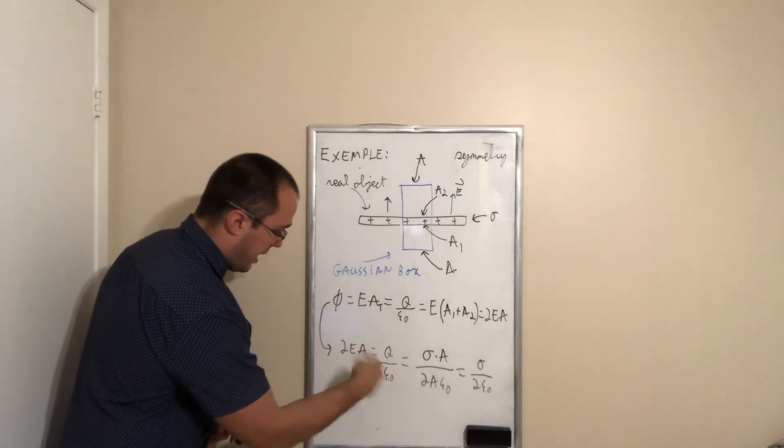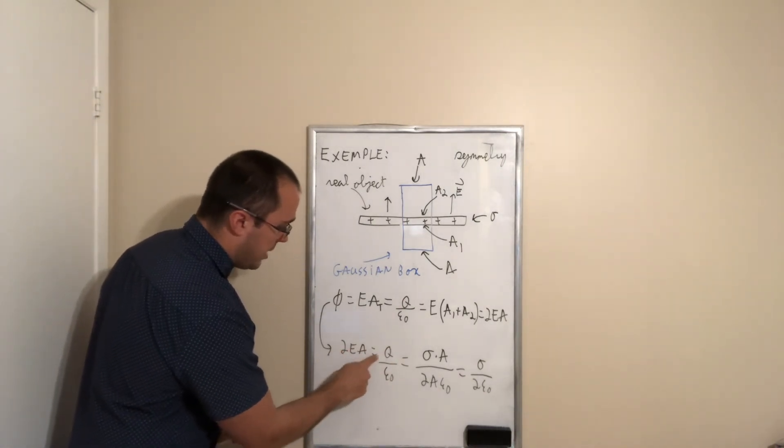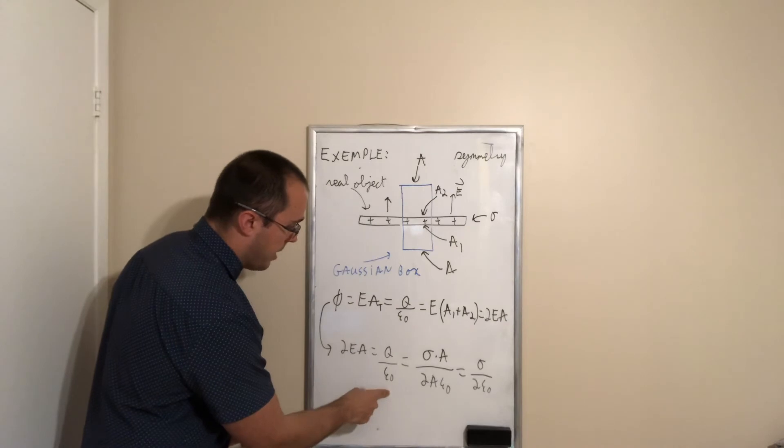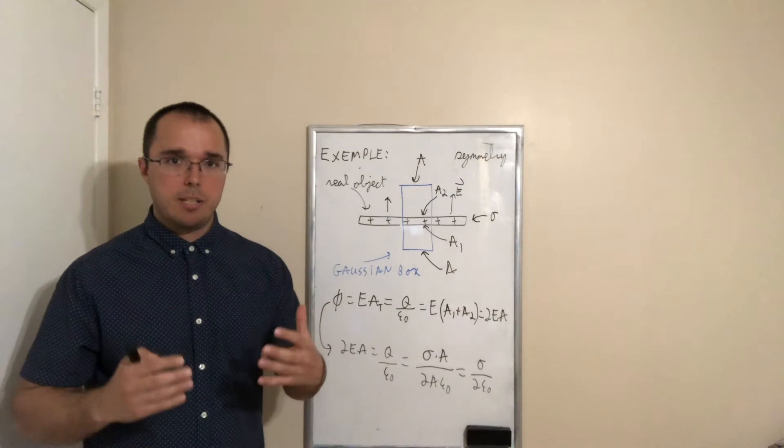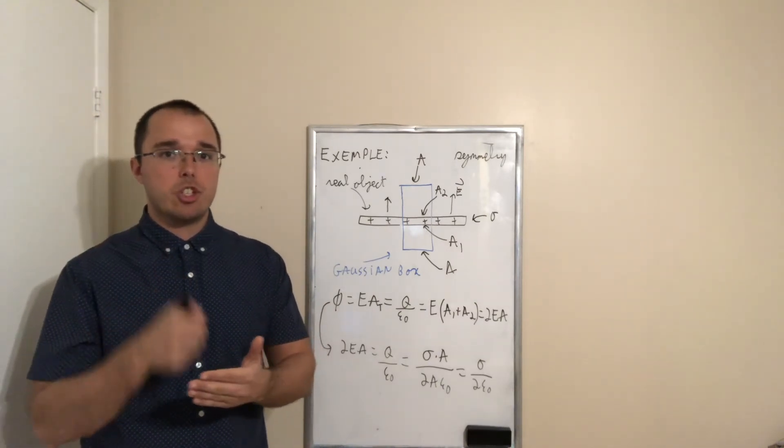So, we have the same logic. 2EA is equal to Q divided by epsilon zero. The charge here, most of the time when we are talking about planar symmetry, we will be given the surface charge density.